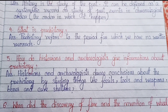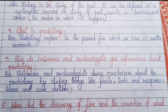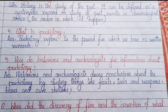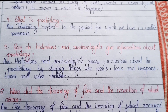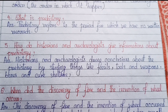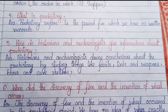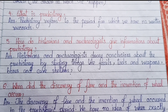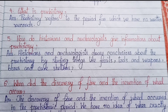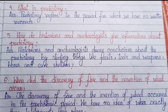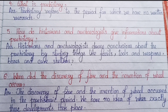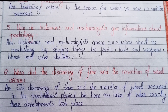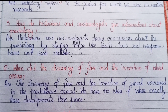Number four: What is prehistory? Prehistory refers to the period for which we have no written records. Number five: How do historians and archaeologists give information about prehistory? Historians and archaeologists draw conclusions about prehistory by studying things like fossils, tools and weapons, bones and cave shelters.